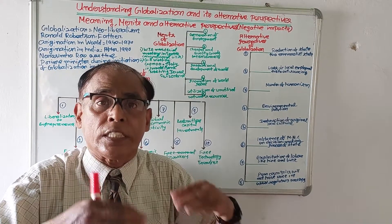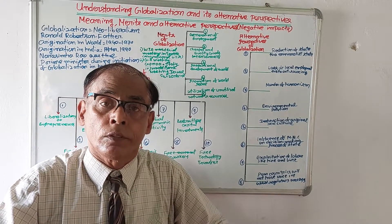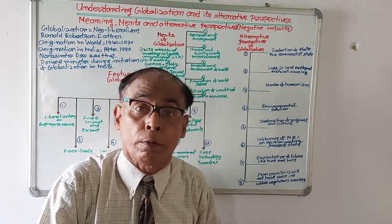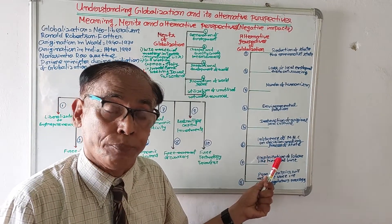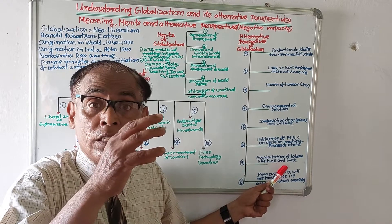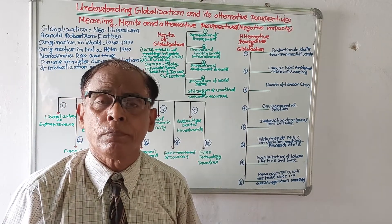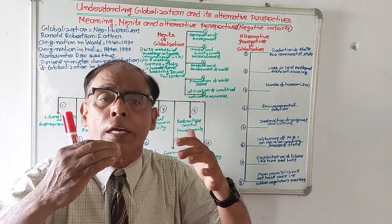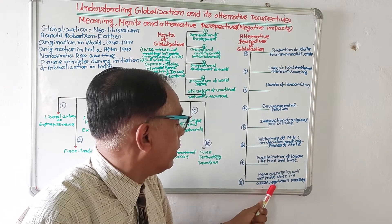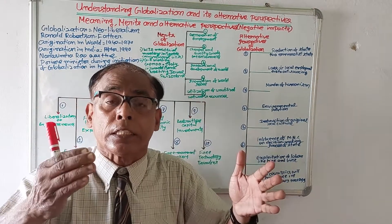Number six: influence of MNCs on the decision-making process of the state. In globalization, multinational companies will come up, establish factories in different nations, and gain control over essential commodities. So people will have to depend on MNCs, and MNCs will become so powerful that they will interfere in the decision-making process of the state. Number seven: exploitation of labor. In globalization, labor will be exploited to an unlimited extent.